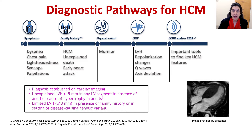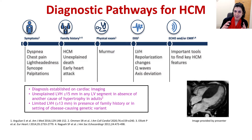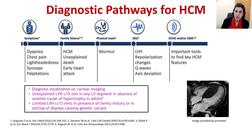There are several ways in which people with hypertrophic cardiomyopathy can come to medical attention. Some people have symptoms such as shortness of breath, dyspnea, chest pain, lightheadedness, passing out, or palpitations. Some people have no symptoms whatsoever and are picked up because of a family history of hypertrophic cardiomyopathy or unexplained sudden death, or even early so-called heart attacks in the family — which were likely sudden cardiac arrests. Some people are detected to have a murmur on physical exam, which leads to further investigation.